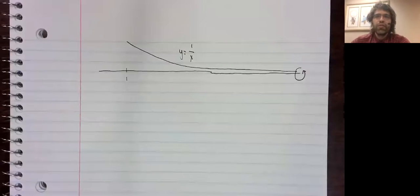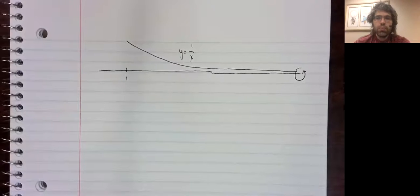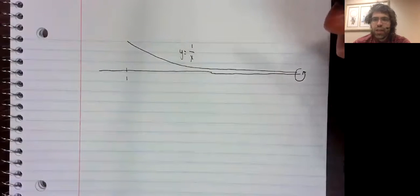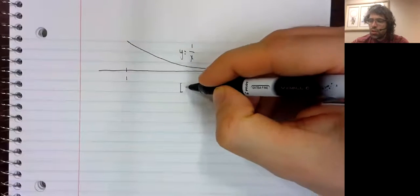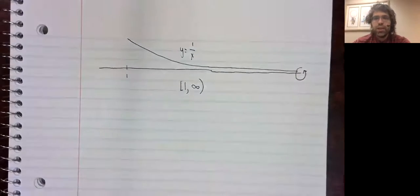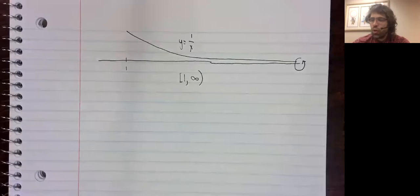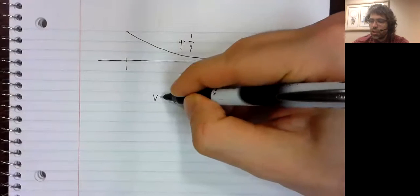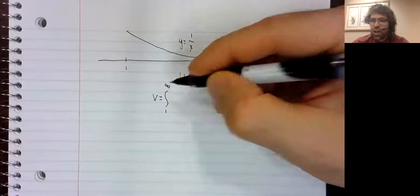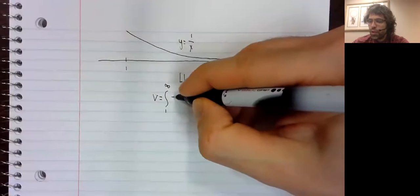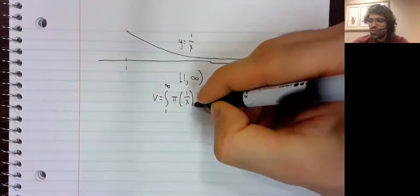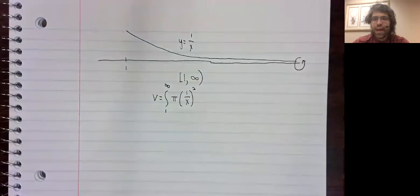And we are going to find the volume of this solid of revolution. And the fact that we're now on an infinite interval is not going to change the volume formula. It's still going to be the integral, this time the improper integral of pi times the radius squared.